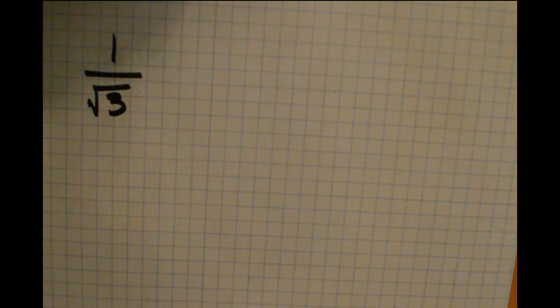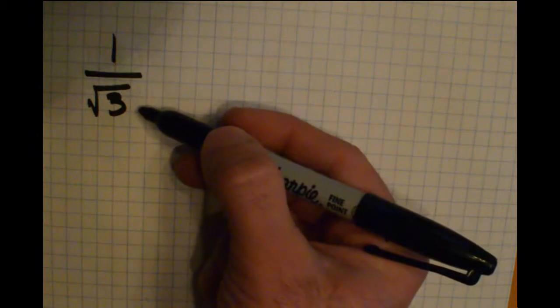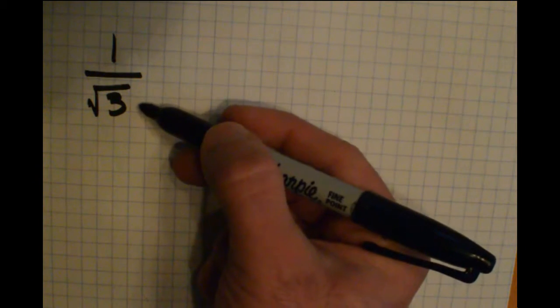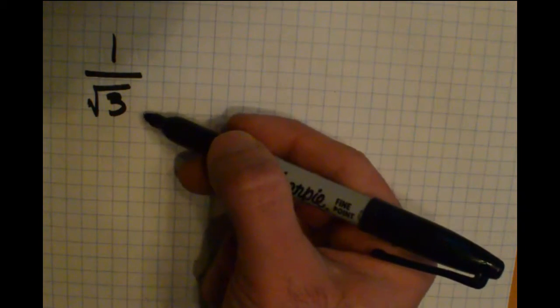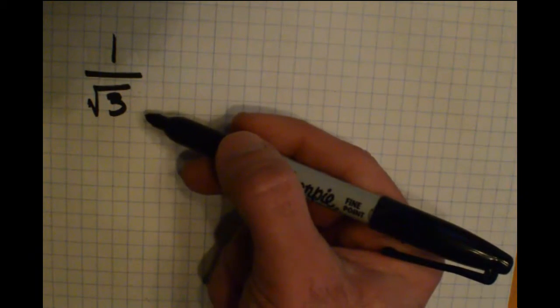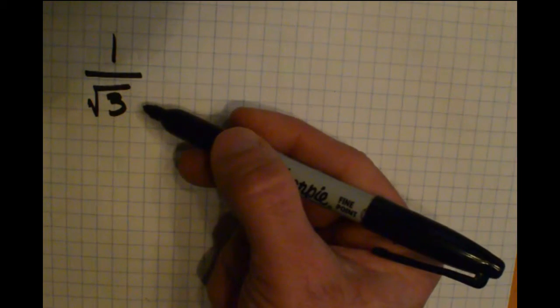One of our rules for simplifying a radical is that this isn't simplified because there is a radical in the denominator of this fraction. So we need to do something to get rid of that radical that's in the denominator.